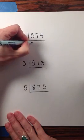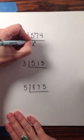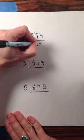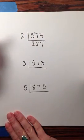So 2 fits into 5 two times with 1 remaining. Into 17 eight times with 1 remaining. And 14 seven times.